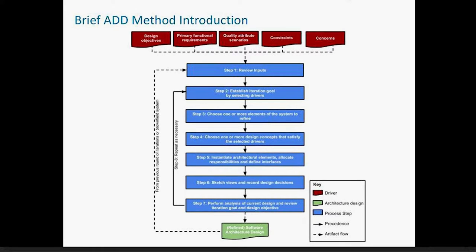I'll very briefly introduce the ADD method. This is of course a subject taught at great length over several days, so don't expect to learn it all in these brief words. ADD begins with collecting a set of inputs: your objectives for design, the concerns and constraints you're trying to address, and your primary functional requirements and quality attributes. You start by reviewing the inputs and ensuring they're as complete and correct as possible. You establish an iteration goal by selecting the most important outstanding driver, then choose one or more architectural elements to refine in the design process.